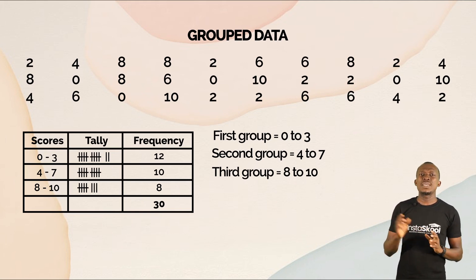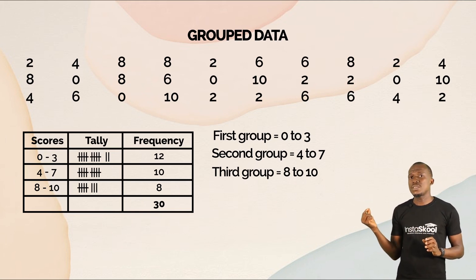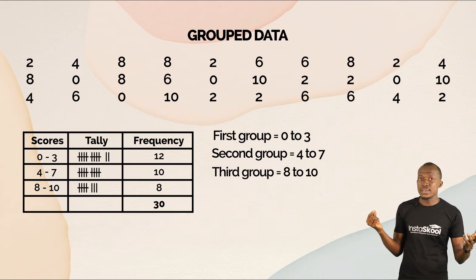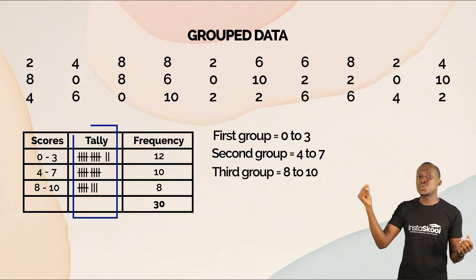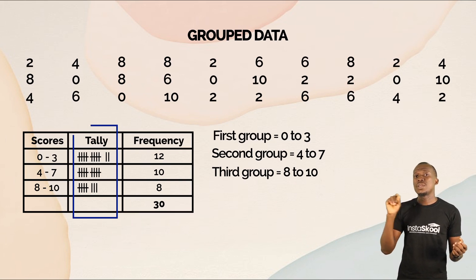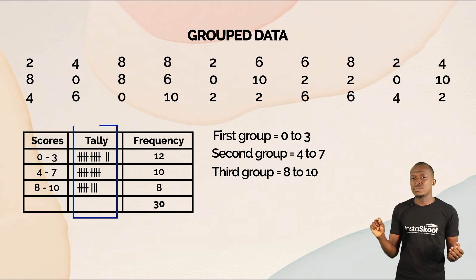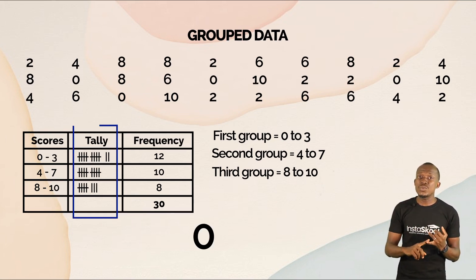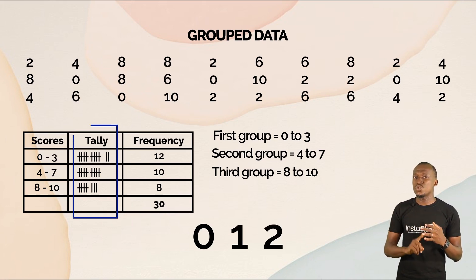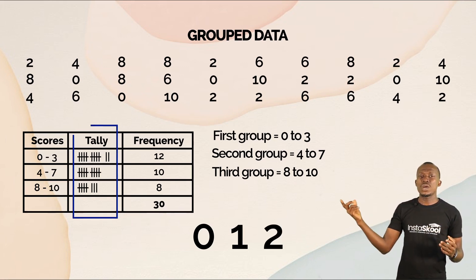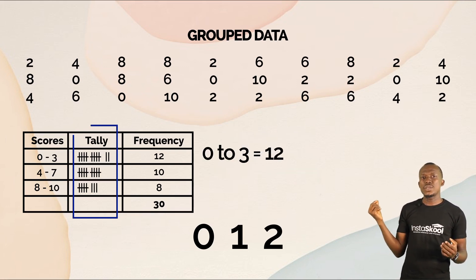Now in calculating the frequency, you would recall how we use the tally. Whenever you see a number that is between zero to two, you put a stroke. When your strokes are up to four, the fifth one is placed across it to make a bundle. How many numbers between zero and three can you find? I can count 12, so we have a frequency of 12.